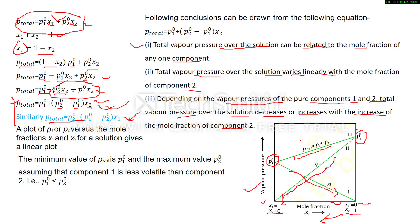This straight line represents the total vapor pressure of the solution. In this case, component 1 is assumed to be less volatile so its vapor pressure is lower, while component 2 is more volatile with higher vapor pressure.